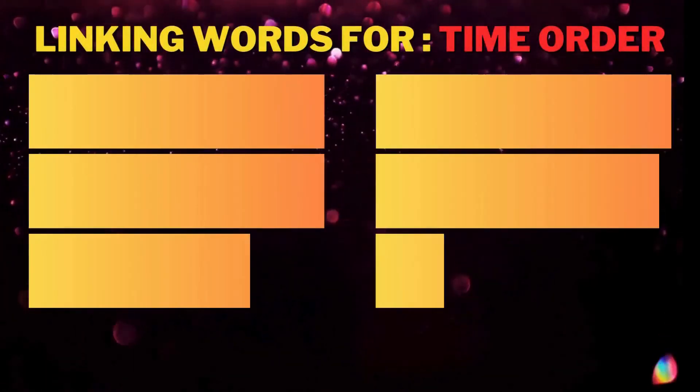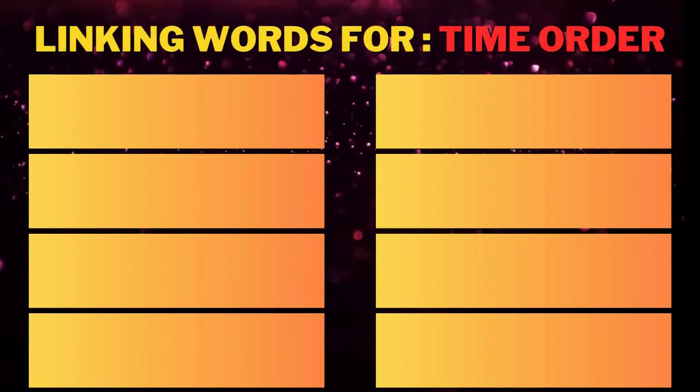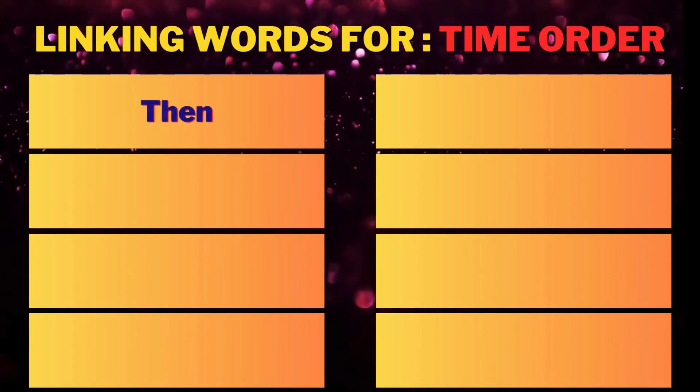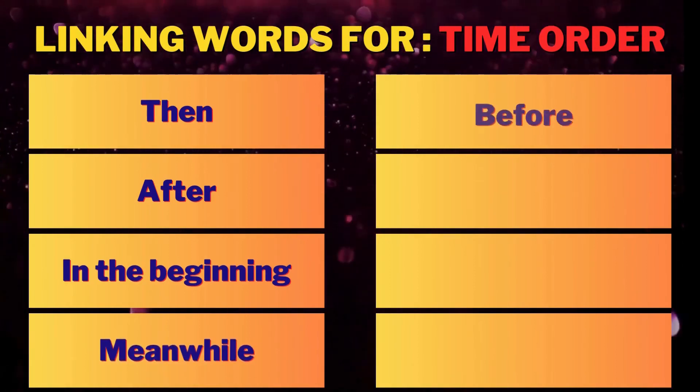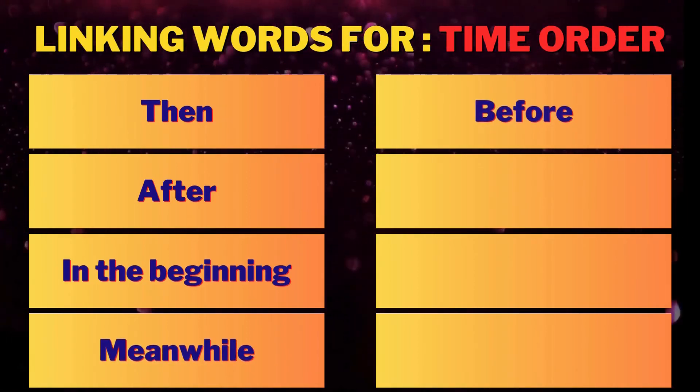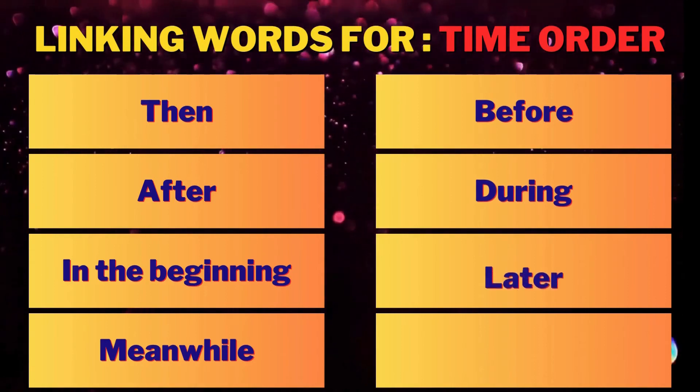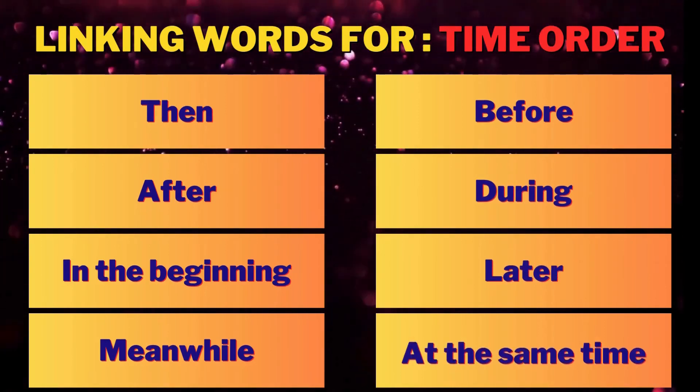Linking words for Time order are: Then, After, In the Beginning, Meanwhile, Before, During, Later, At the Same Time.